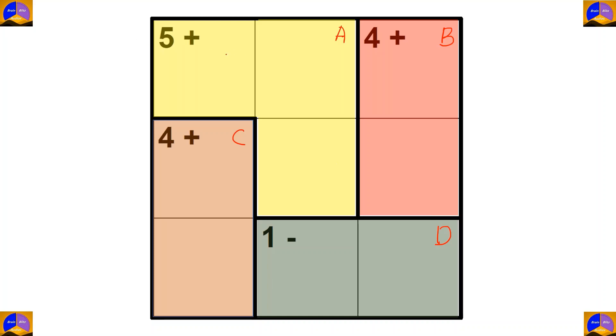In cage A there are 3 cells and the operation is addition. After adding, our result must be 5. So, for cage A there are 2 options: 2 plus 2 plus 1, and 1 plus 3 plus 1.